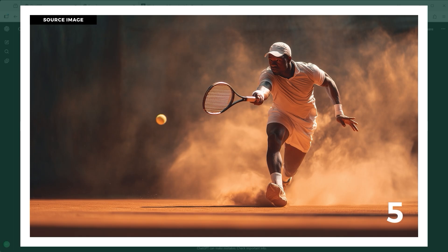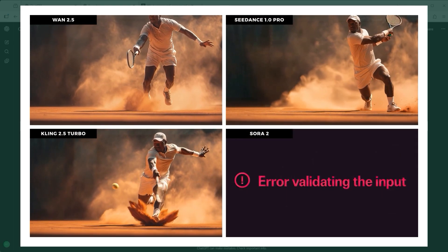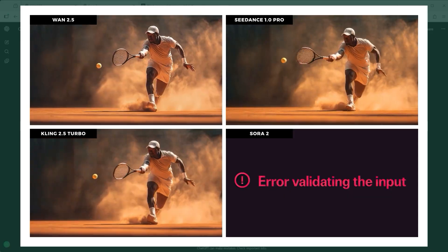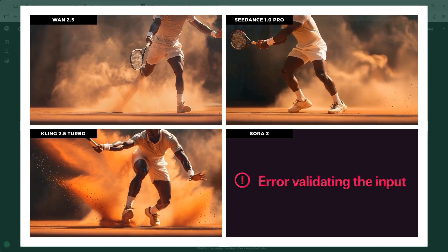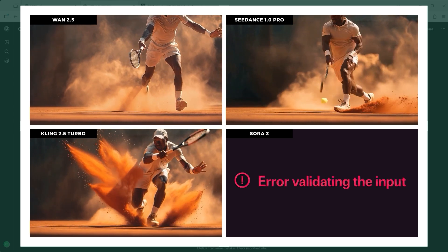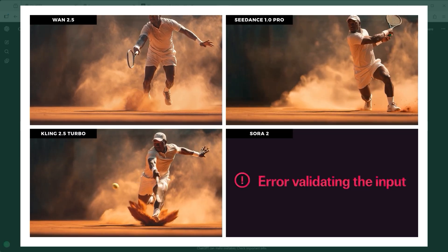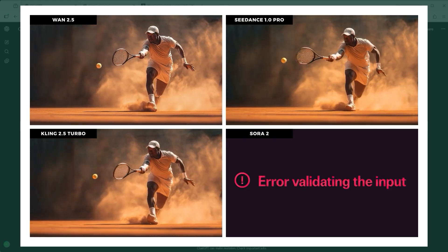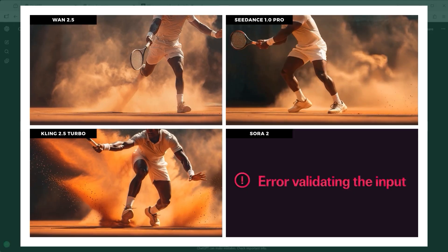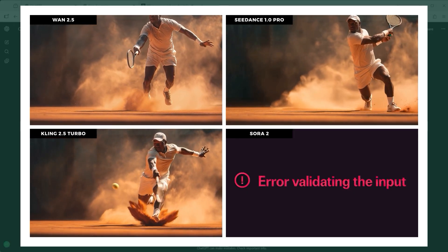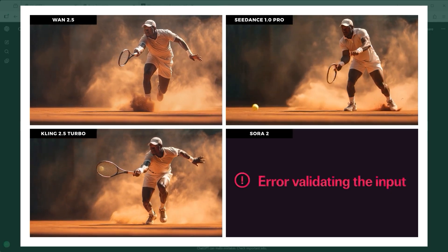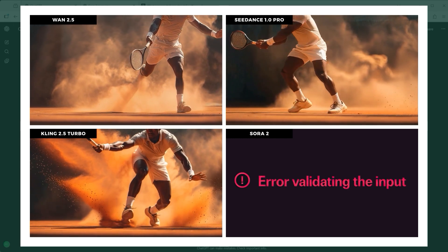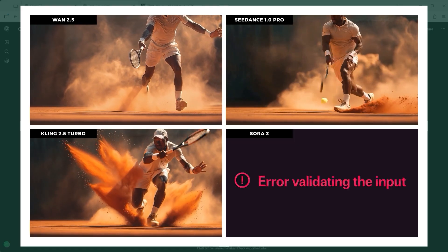One of the most challenging tests remains motion, mass and reaction. Example 5 tackles exactly that. A tennis player charges toward the ball, sand flying in the air, warm backhand cutting across the scene — cinematic, intense, focused. My goal was simple: the ball should bounce off the racket in a physically accurate way, flying in the right direction with believable weight. Kling 2.5 Turbo created two contact points: racket and sand — not good. In C-Dance Pro the ball moved unnaturally, almost self-propelled. One 2.5 started off great and ended well, but the ball got swallowed by the racket. And Sora 2 — once again, task refused.